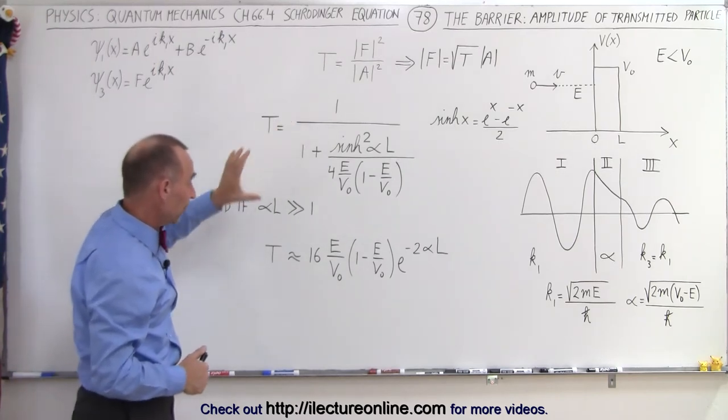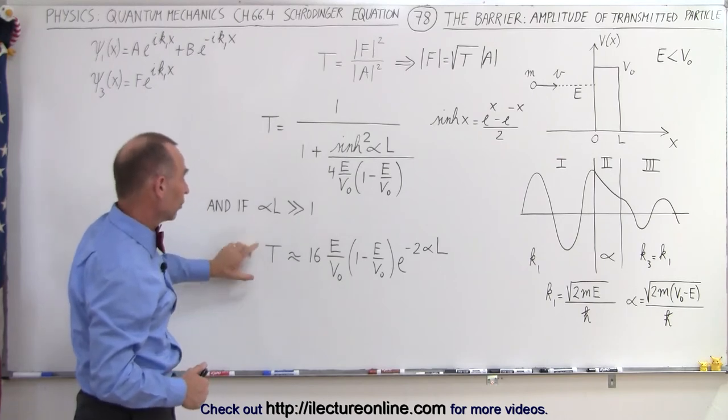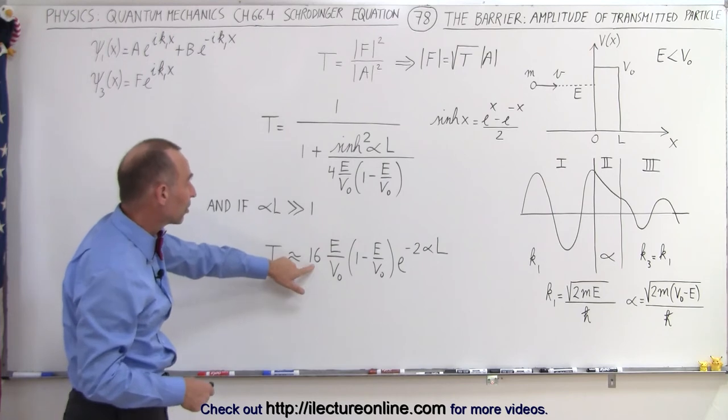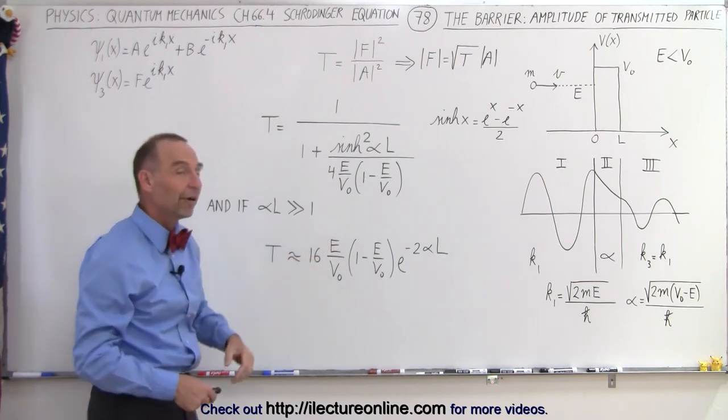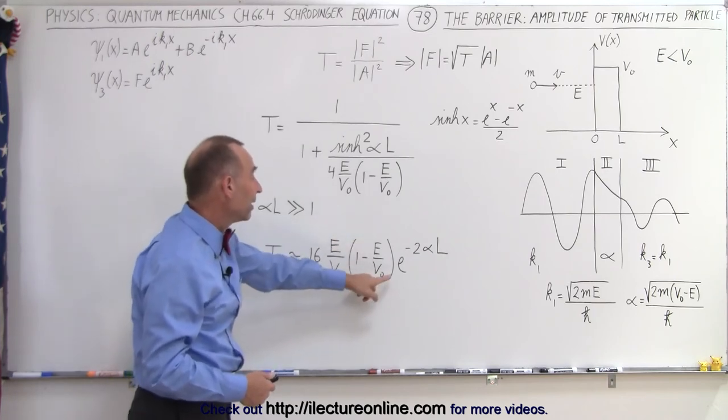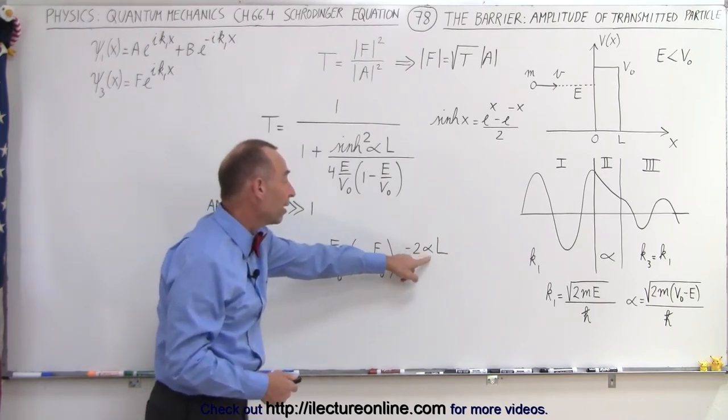Then this equation simplifies, so that the transmission coefficient is approximately equal to 16 times the ratio of the energy of the particle divided by the potential of the barrier times 1 minus E over V times e to the minus 2 alpha L.